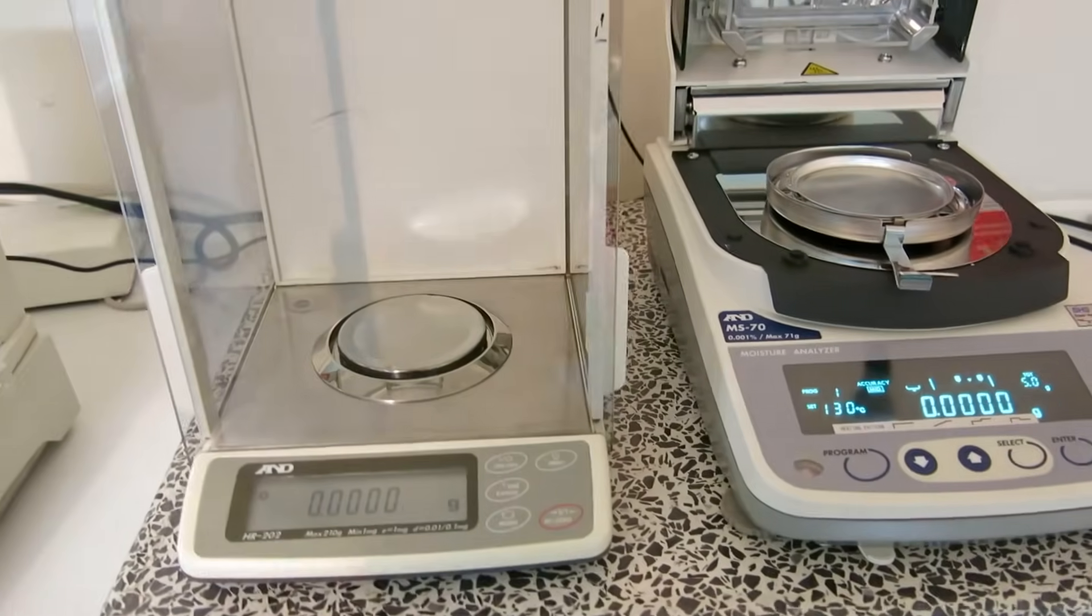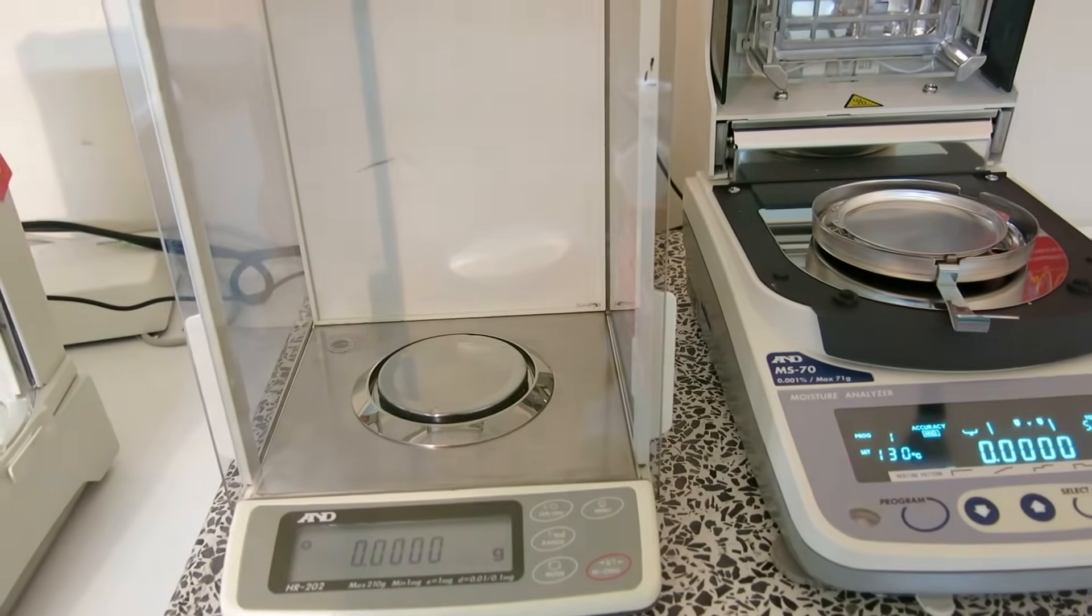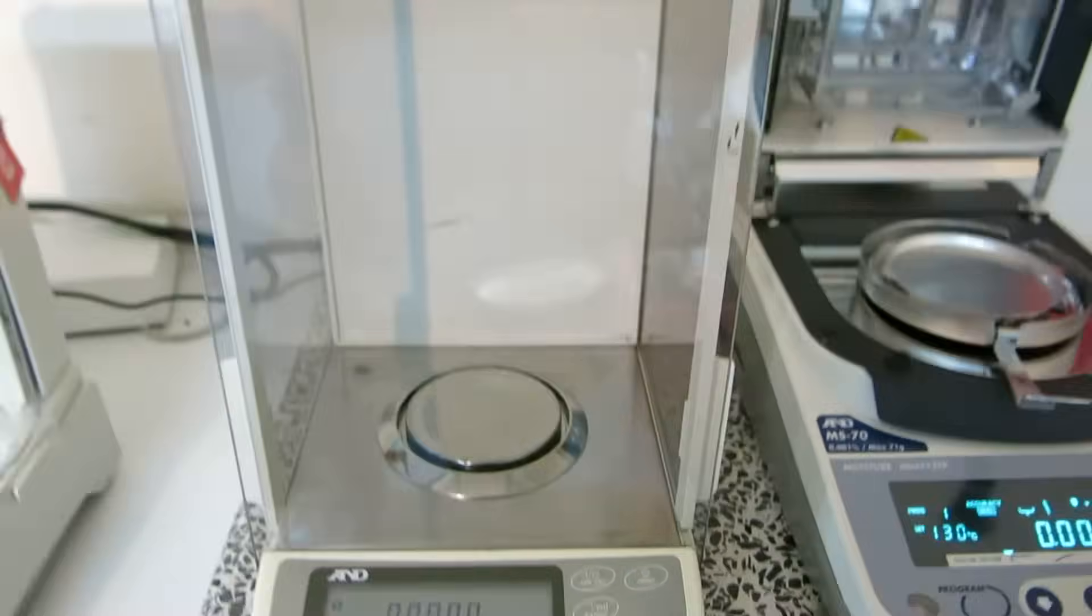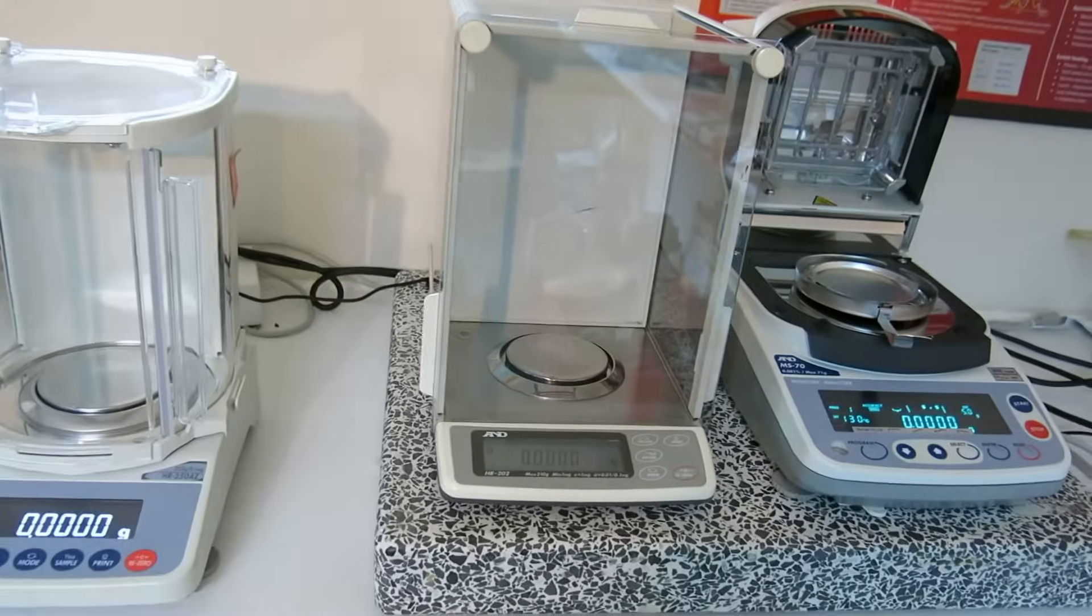Moving on. We've got the A&D HR202. This is a used balance. This is a 5 decimal place. 210g. Again, excellent balance. Very good condition. Talk to us about that.